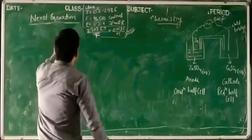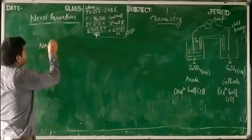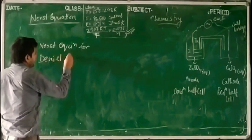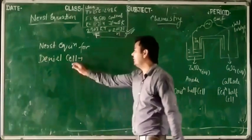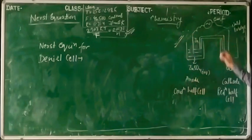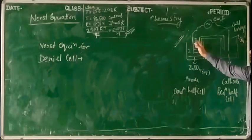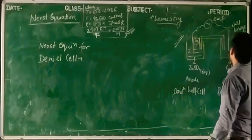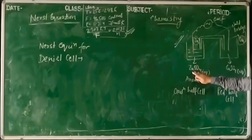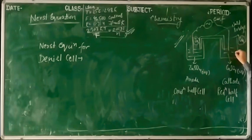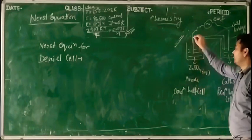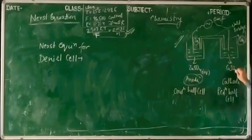Now we will discuss the Nernst equation for the Daniel cell. The Daniel cell is also called a galvanic cell and is a type of electrochemical cell with two electrodes — a zinc electrode and a copper electrode in separate containers. Zinc electrode works as the anode and copper electrode works as the cathode.